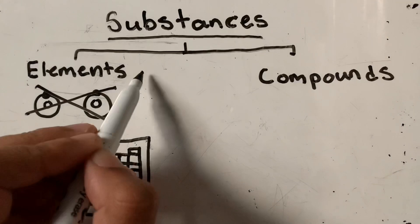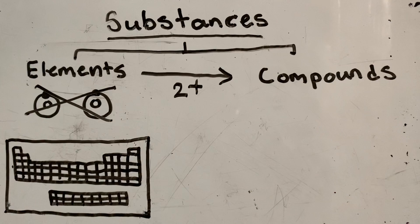Compounds have fixed proportion of elements in them. Some examples of compounds are water, ammonia, sugar, hydrogen peroxide, etc.